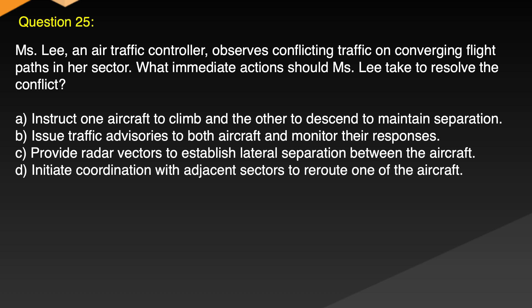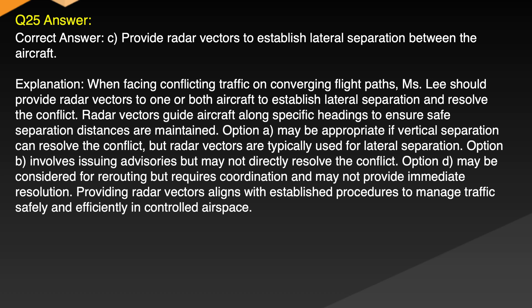Question 25. Ms. Li, an air traffic controller, observes conflicting traffic on converging flight paths in her sector. What immediate actions should Ms. Li take to resolve the conflict? A. Instruct one aircraft to climb and the other to descend to maintain separation. B. Issue traffic advisories to both aircraft and monitor their responses. C. Provide radar vectors to establish lateral separation between the aircraft. D. Initiate coordination with adjacent sectors to route one of the aircraft. Correct answer: C. Provide radar vectors to establish lateral separation between the aircraft.